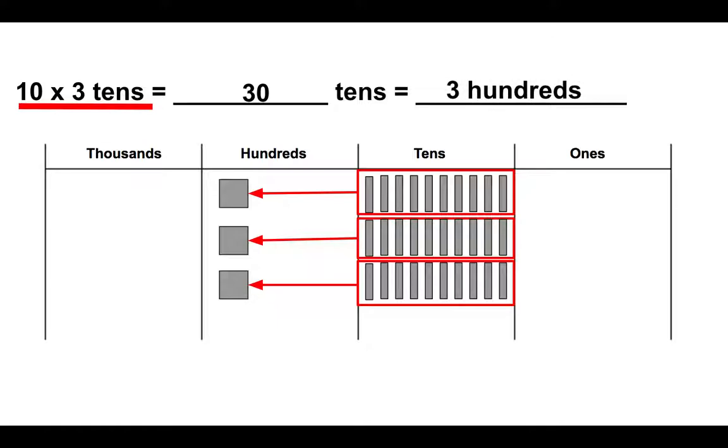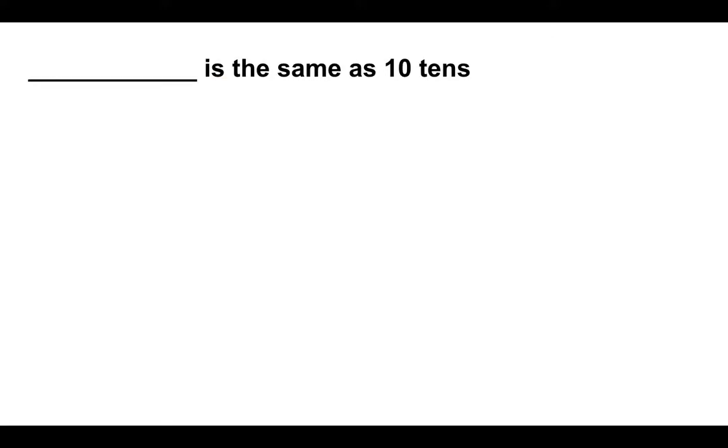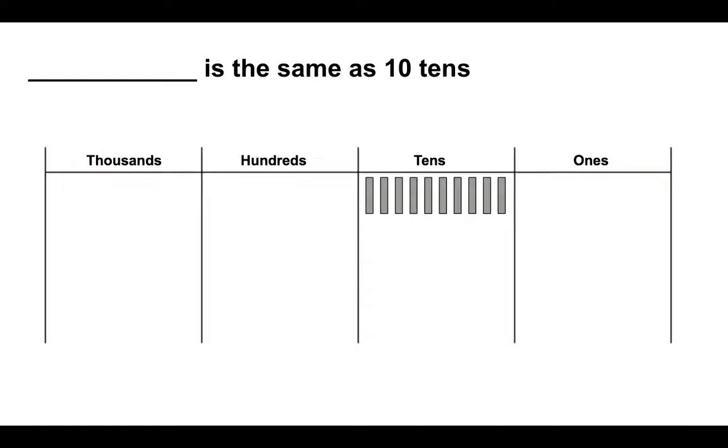Now these next problems will ask us to use our knowledge without necessarily seeing a place value chart. You can visualize it, but it's not necessary to draw one out. Say you're given the problem, blank is the same as ten tens. Well inside your head, you can imagine a place value chart with ten tens. They can be bundled together and turned into a hundred. So you can write, without having to draw anything, that one hundred is the same as ten tens.